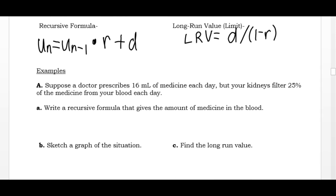So we are going to go to a doctor and the doctor will prescribe us 16 milliliters of medicine each day, but my kidneys will filter 25% of the medicine from my blood each day. So I'm going to do my side calculation for the ratio, the same as the geometric sequences. I am removing, filtering out, 25%. That's a percent decrease situation. So if I have 100% and I take away 25%, my body retains 75% of the medicine in my bloodstream every day.